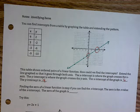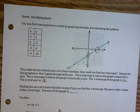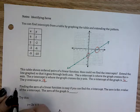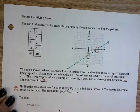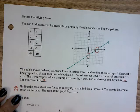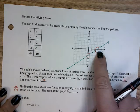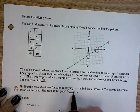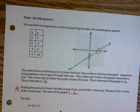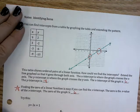We graphed intercepts last class, but finding the zero of a linear function is just an extension of what we did last class. The zero by definition is where y is 0, so we're talking about the x-intercept. Finding the zero of a linear function is easy if you know the x-intercept. The zero is the x value of the x-intercept, so the zero of this graph is 6. Zero means where y is zero. When y is zero, we're finding the x-intercept.